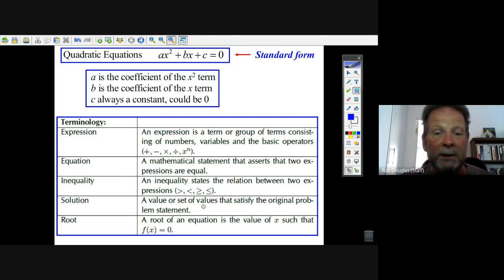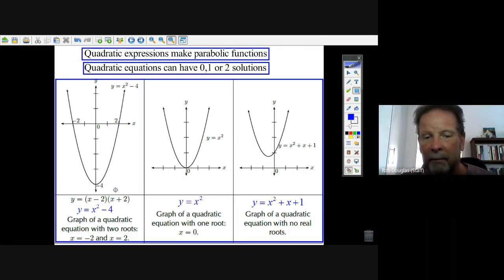An expression is a term or group of terms consisting of numbers, variables, and the basic operators. The terms are separated by positive and negative. An equation is a mathematical statement when two expressions are equal. If you've got an equals, it's an equation. When you have greater than or less than, it's a relationship called an inequality between two expressions.